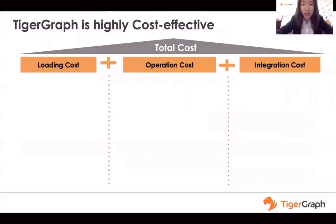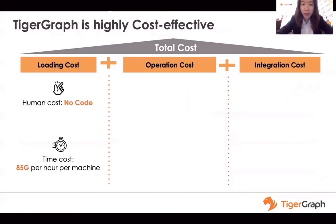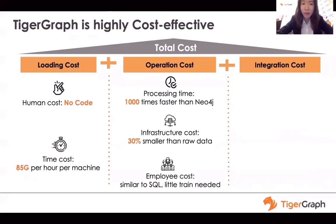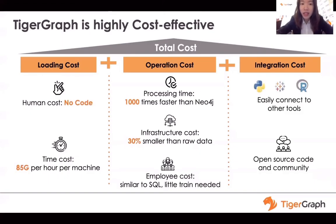With so many advantages, TigerGraph is actually very cost-effective. It has a very low data loading cost because when loading data into the database, no code is needed and the loading speed is as fast as 85 gigabytes per hour per machine. The operational cost is also low because TigerGraph's data processing time is up to a thousand times faster than other competitors. The GSQL language is similar to SQL, so little employee training is needed. TigerGraph also brings little additional integration cost because it can easily connect to other tools like Python with only several lines of simple code, and related open resources and communities are rapidly developing.